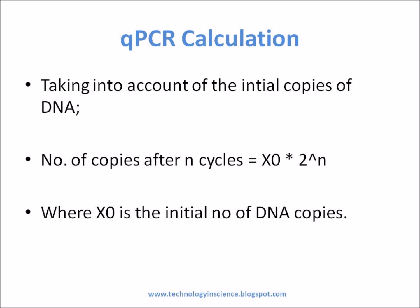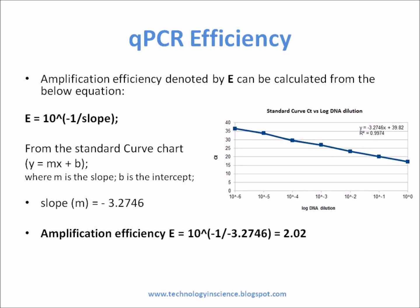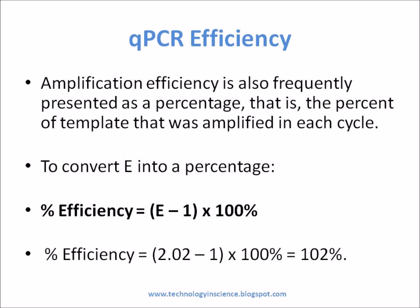If the PCR assay has 100% efficiency, one copy becomes 2 after one cycle. Amplification efficiency, denoted by E, can be calculated from the equation: E equals 10 to the power of 1 divided by slope. Amplification efficiency is also frequently presented as a percentage — that is, the percent of template that was amplified in each cycle. An efficiency close to 100% is the best indicator of a robust, reproducible assay.